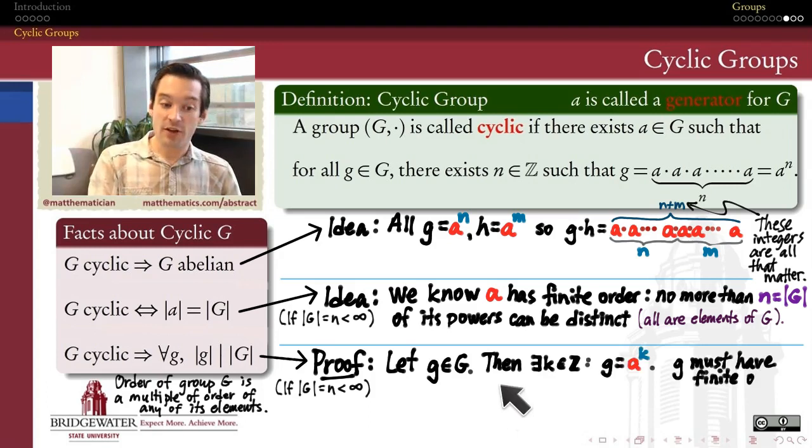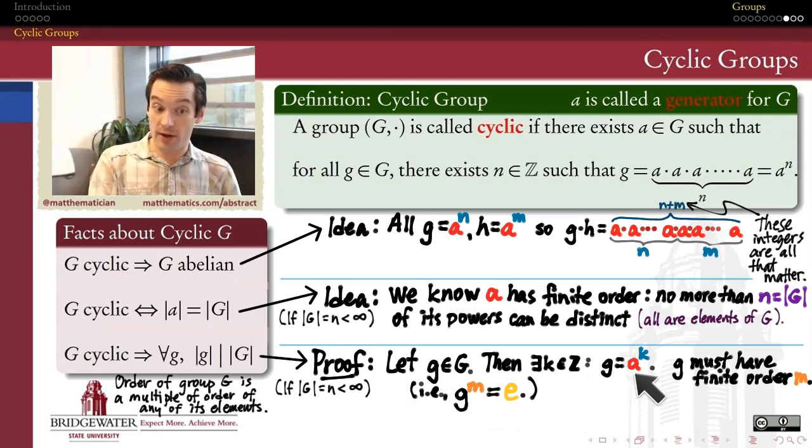Well, by definition of a cyclic group, we know that this element G must be some power of the generator A. So there exists an integer such that G is A raised to that integer power. It's called the integer K. So G is equal to A to the K.